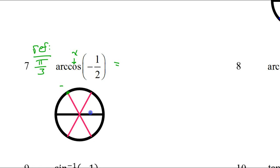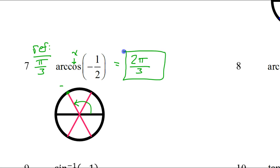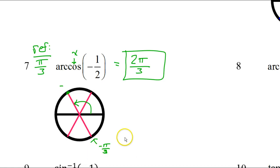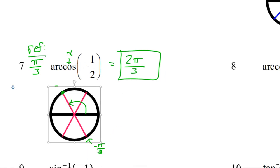The reference angle is pi over 3, but this angle is 2 pi over 3 — not negative pi over 3. That's going to be the answer for number 7. Notice that negative pi over 3 would be down in the fourth quadrant. That cannot be the answer because inverse cosine is undefined down there — range restrictions. There you go. I was waiting for that to happen.